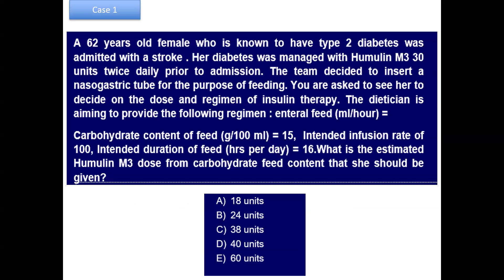Another case scenario: a 62-year-old female with type 2 diabetes admitted with stroke. Her diabetes was previously managed with humulin M3, taking 30 units twice daily prior to admission. The team decided to insert an NG tube for enteral feeding. We need to decide on the dose and regimen of insulin therapy. The dietitian's regimen is: carbohydrate content 15 g per 100 ml, intended infusion rate 100 ml/hour, and intended duration 16 hours per day. The question asks: what is the estimated humulin M3 dose from the carbohydrate feed content — is it 18, 24, 38, 40, or 60 units?